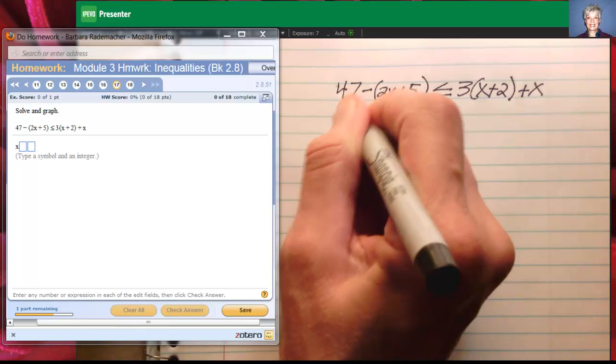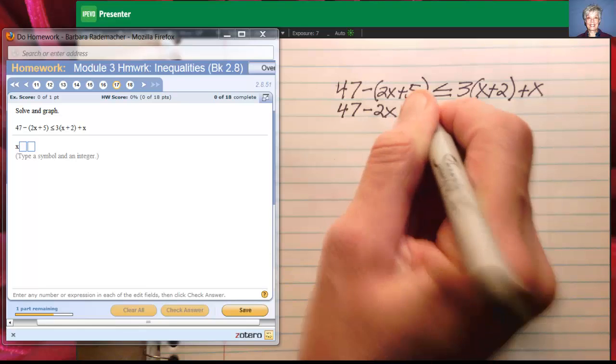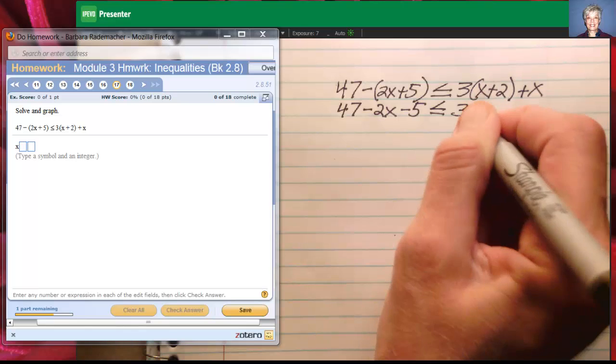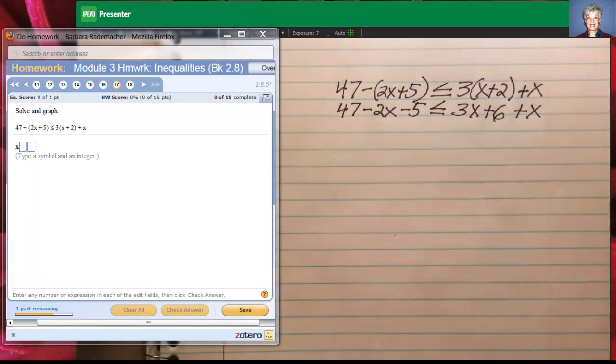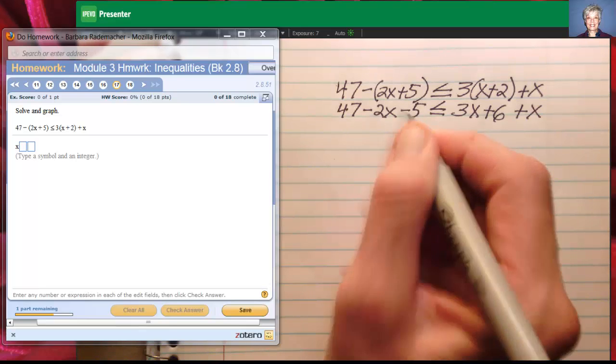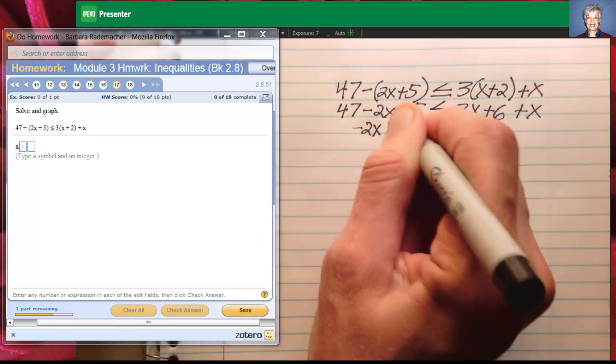I'll have 47 minus 2x minus 5 is less than or equal to 3x plus 6 plus x. Now I'll combine like terms on the left and combine like terms on the right. 47 minus 5 is 42. So I'll have negative 2x plus 42.